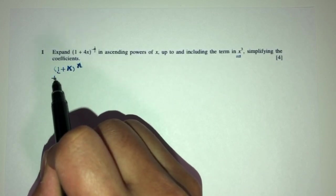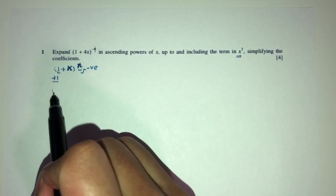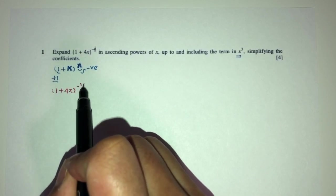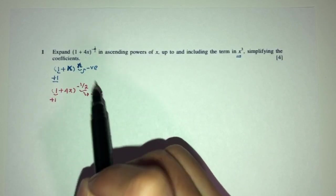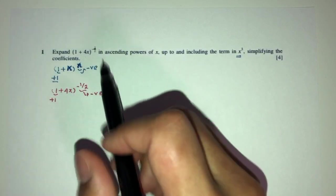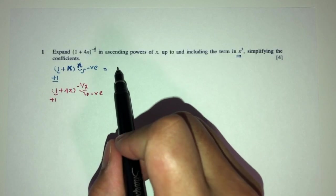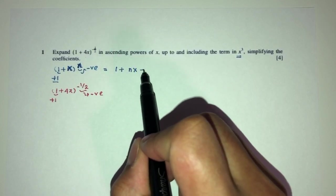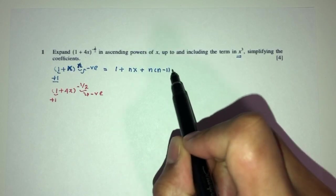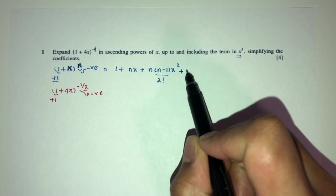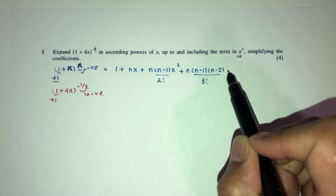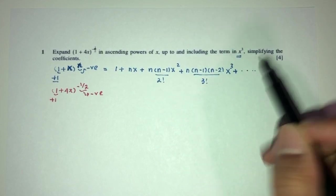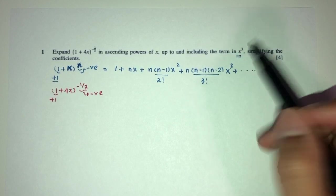This expression has to start with plus 1 and the other part has to be a negative value. Here we have (1 + 4x)^(-1/2). This is plus 1 and this is a negative value. Once we confirm that, we can use our formula. Expanding gives: 1 + nx + n(n−1)x²/2! + n(n−1)(n−2)x³/3!, and we stop at x³.